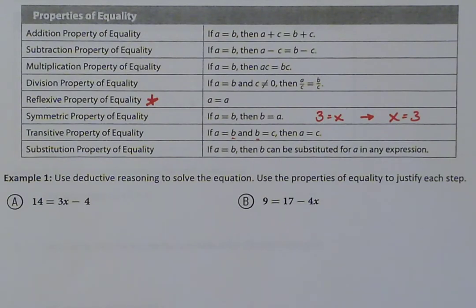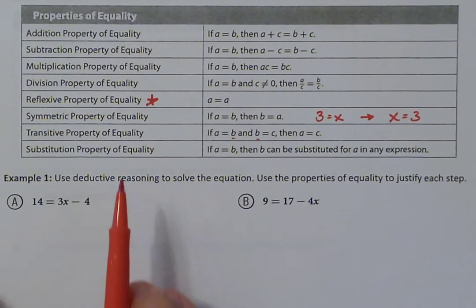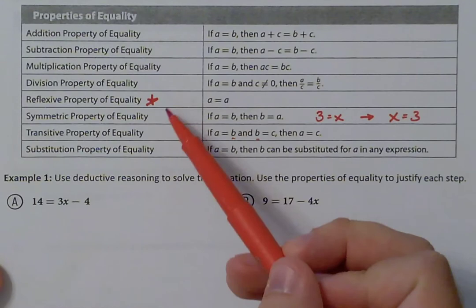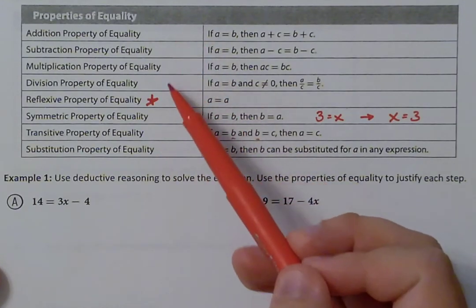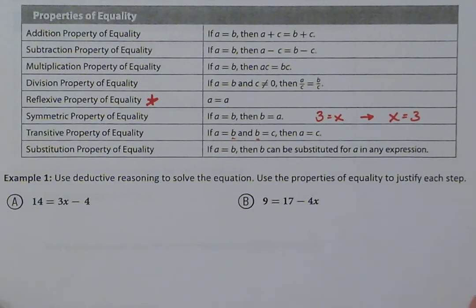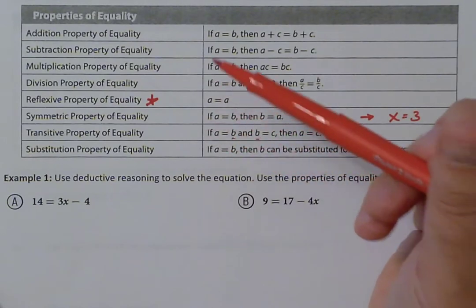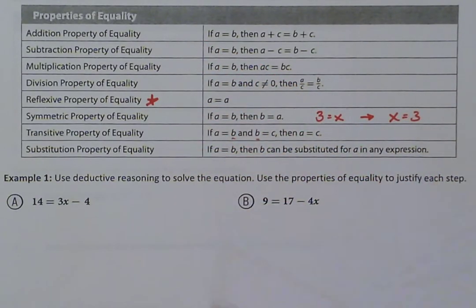The substitution property of equality states that you can take any value for a variable — x, y, A, B — and plug it in. So if you're told x equals three, you can substitute three in for x and simplify your equation. The main properties to know are reflexive, symmetric, transitive, and substitution, plus adding, subtracting, multiplying, and dividing.